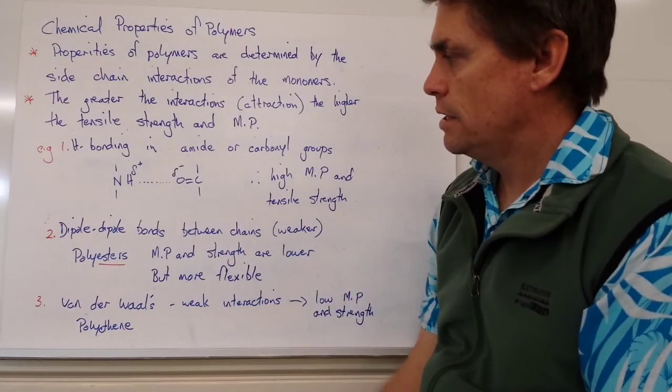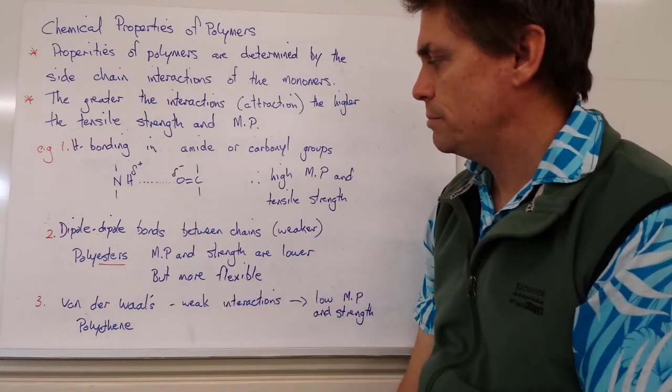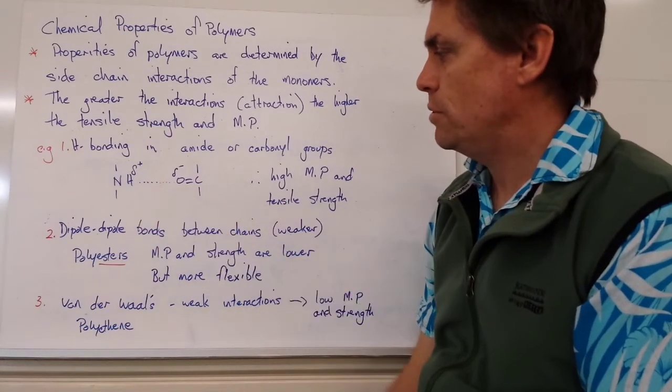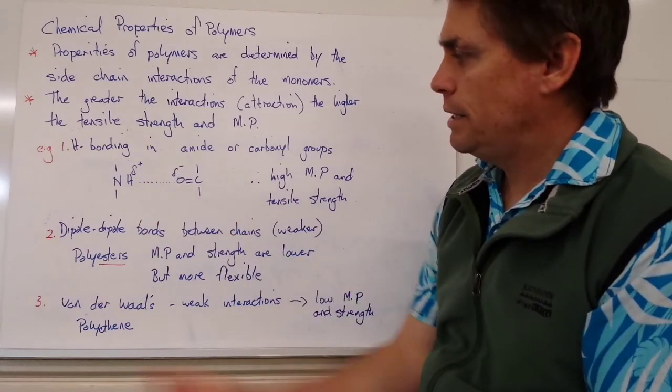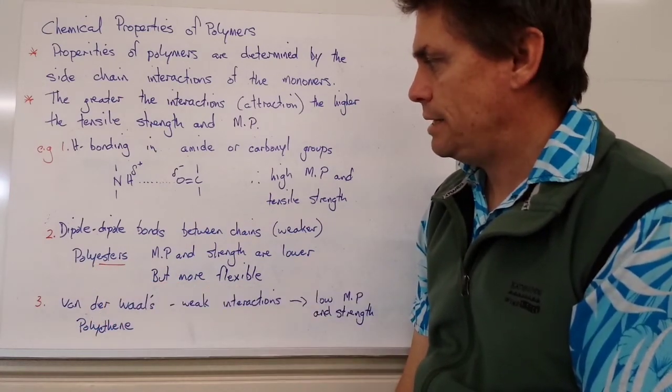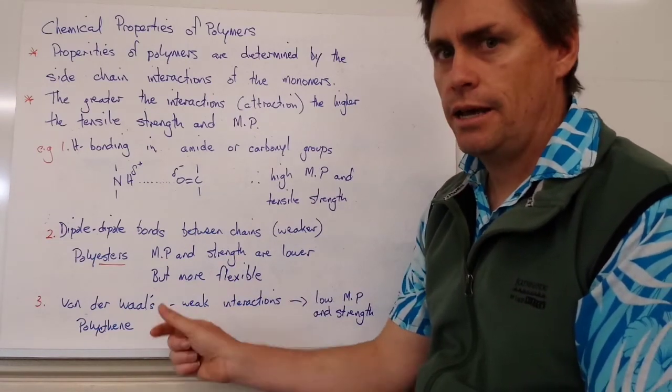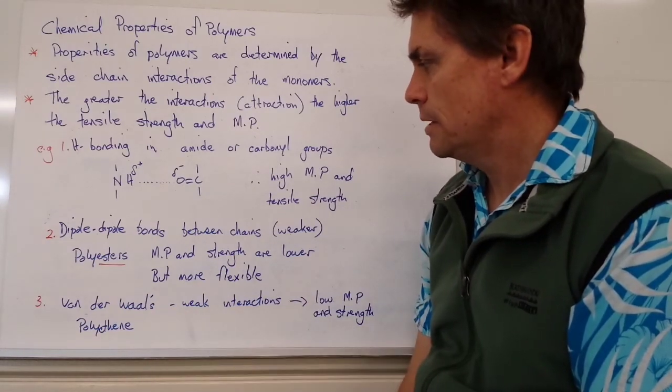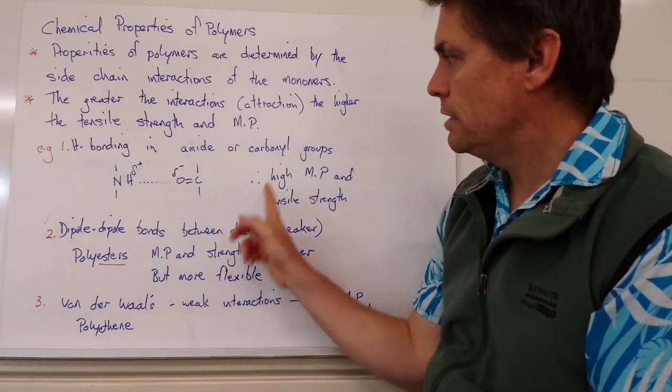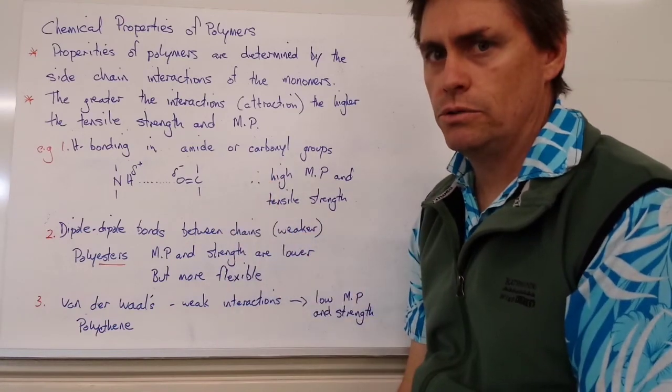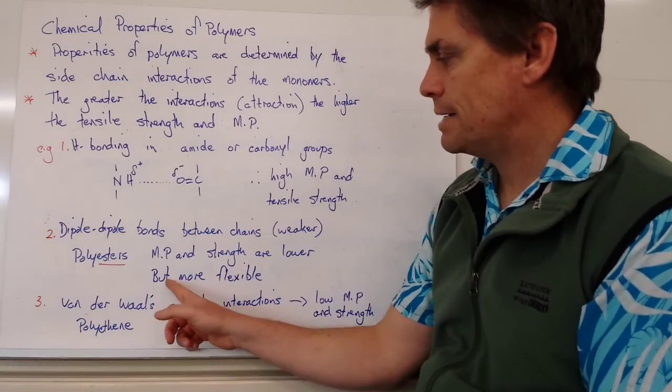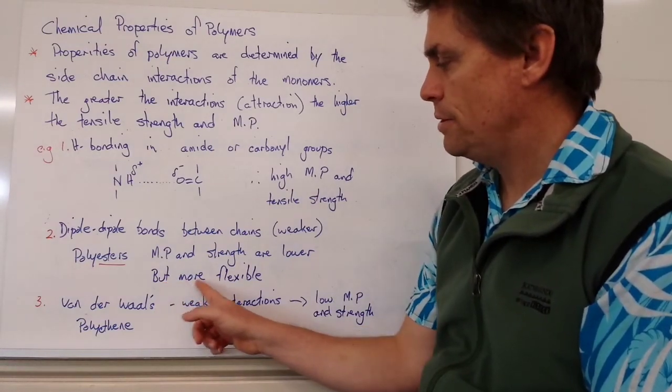On the other hand, we can also get dipole-dipole bonds between chains, but these are weaker than hydrogen bonding. We find this in molecules called polyesters, where we get the interaction between the dipoles of one chain and the dipoles of another chain. The melting point and tensile strength of polyesters is lower than for molecules that contain hydrogen bonding. So they're weaker and melt at lower temperatures, but as far as polymers go, they're more flexible.